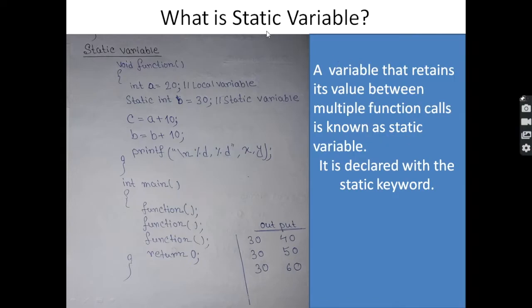Here in this code for static variables: void function with int a equal to 20 — this is a local variable, as it is declared inside the function. Next, static int b equal to 30 — this is a static variable. The static keyword causes the variable to retain its value across multiple function calls.